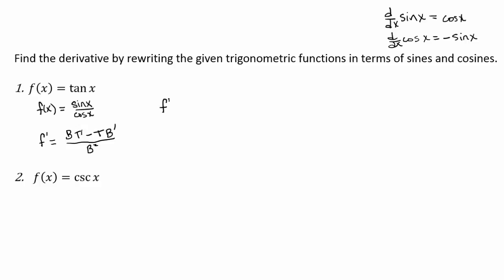So f prime of x is going to be equal to bottom, which is in this case, cosine x times the derivative of the top. Derivative of sine is cosine of x minus the top, which is sine of x times the derivative of the bottom. What's the derivative of cosine again? Negative sine x. All over the bottom squared. So cosine of x squared.